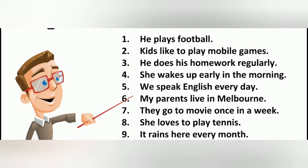Example six: 'My parents live in Melbourne.' My parents is a plural subject, so we don't add -s to live. Example seven: 'They go to a movie once a week.' They is third person plural, so we don't add -s to go. Example eight: 'She loves to play tennis.' She is third person singular, so we add -s to love — loves.